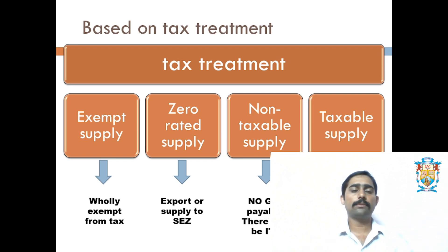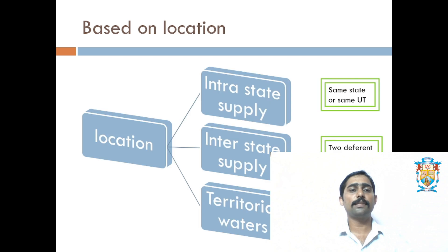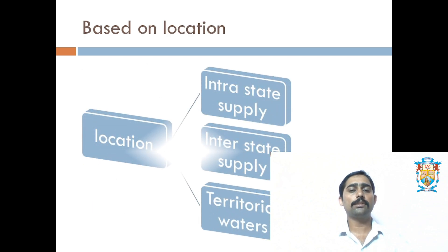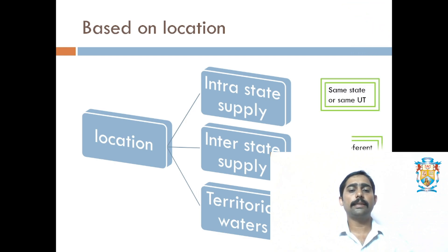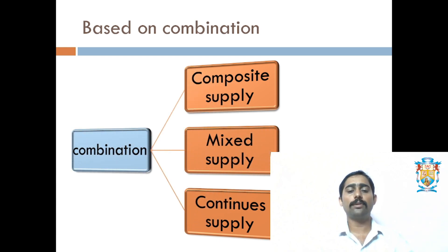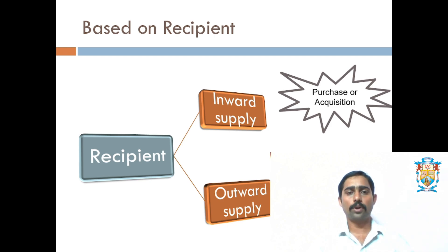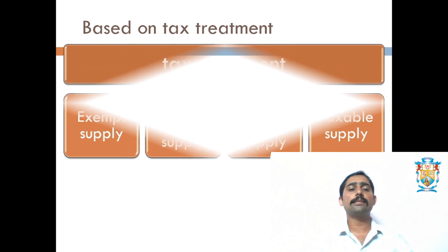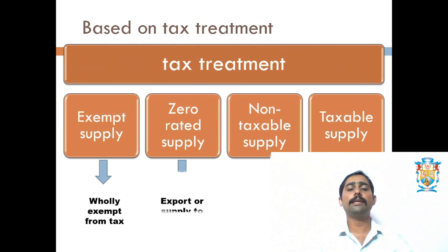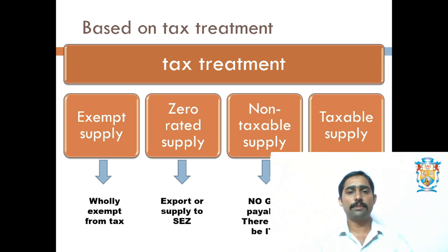To summarize quickly, we have seen various types of supplies under GST. Based on location: three types — intrastate, interstate, and territorial waters. Based on combination: three types — composite, mixed, and continuous supplies. Based on recipient (who will receive the products): two types — inward and outward. Based on tax treatment: four types — exempt, zero-rated, non-taxable, and taxable supplies. These are the various types of supplies which come under GST.